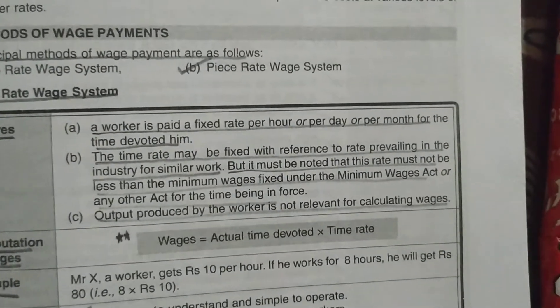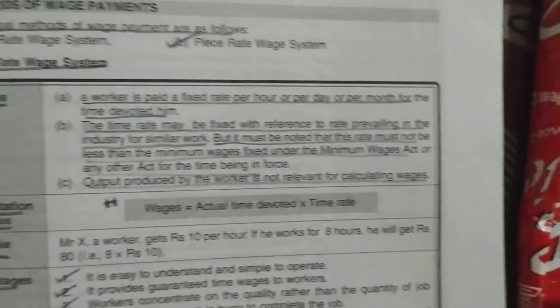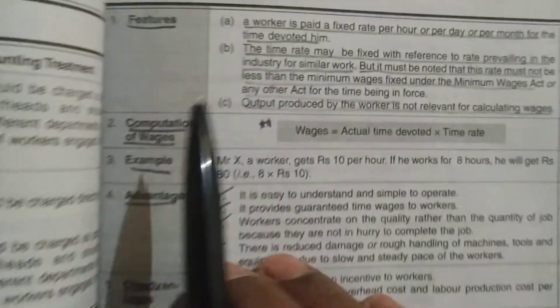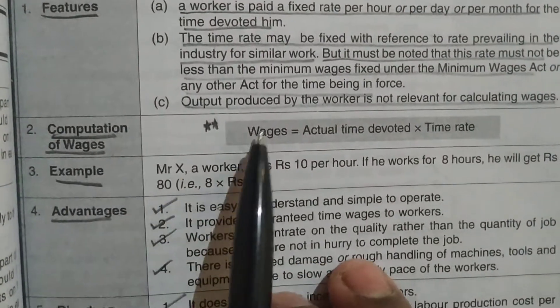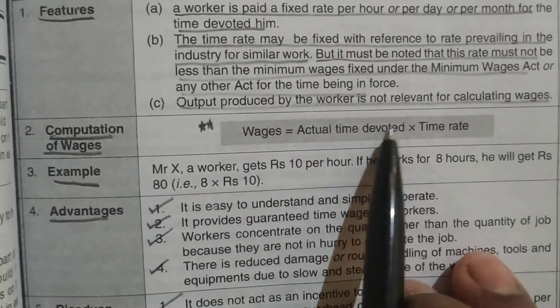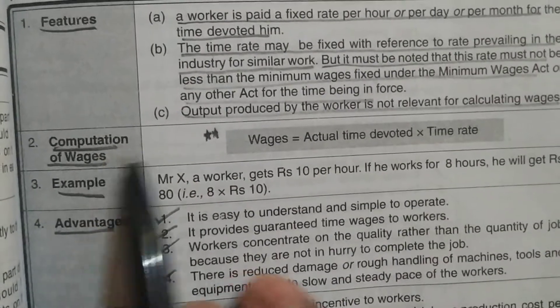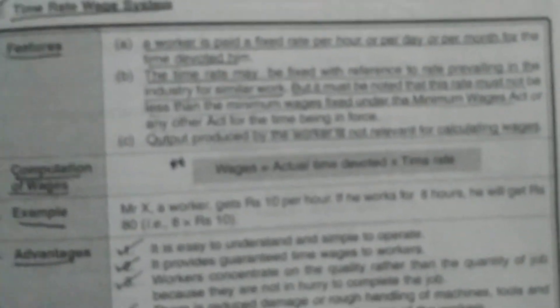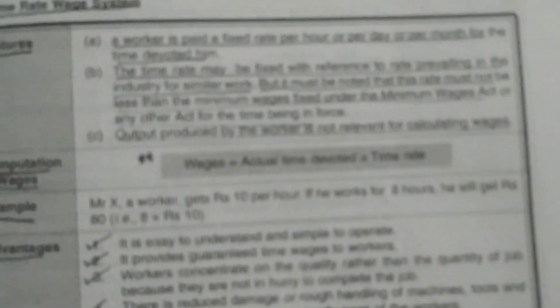Output will not be seen in the time rate system. If a worker comes to the factory in the morning and leaves in the evening, management will not check how many units he has produced — they simply track time in and time out. Computation of wages: Wages = Actual Time Devoted × Time Rate. Let us now look at an example with Mr. X.